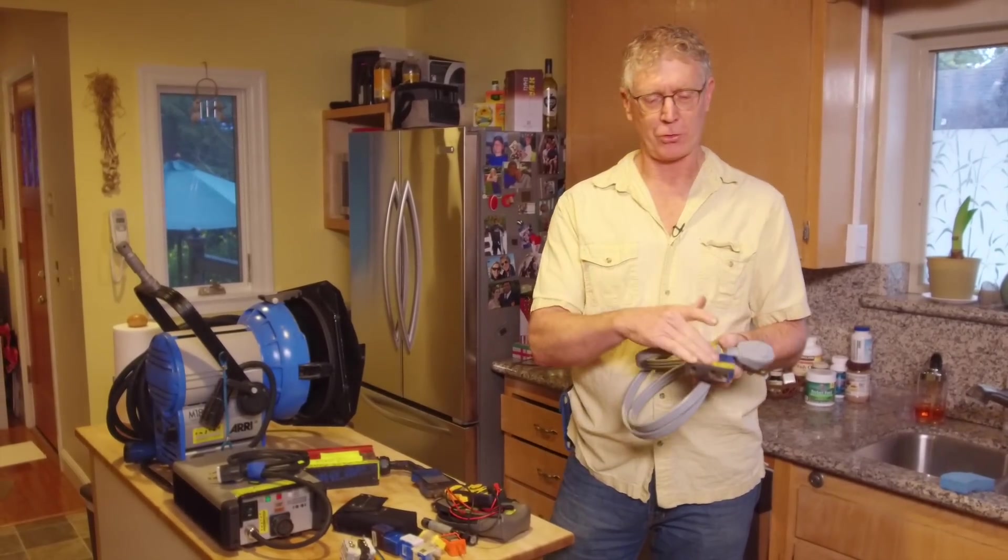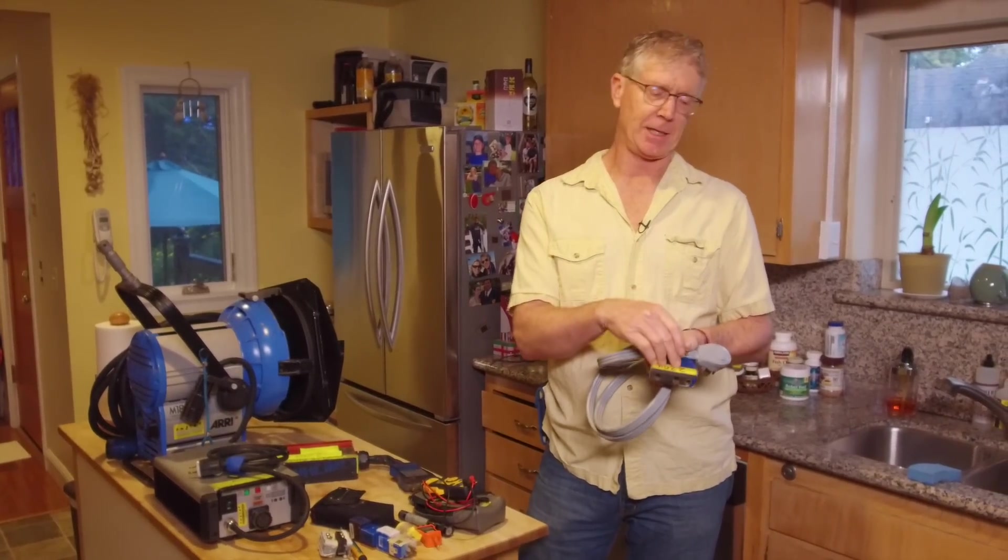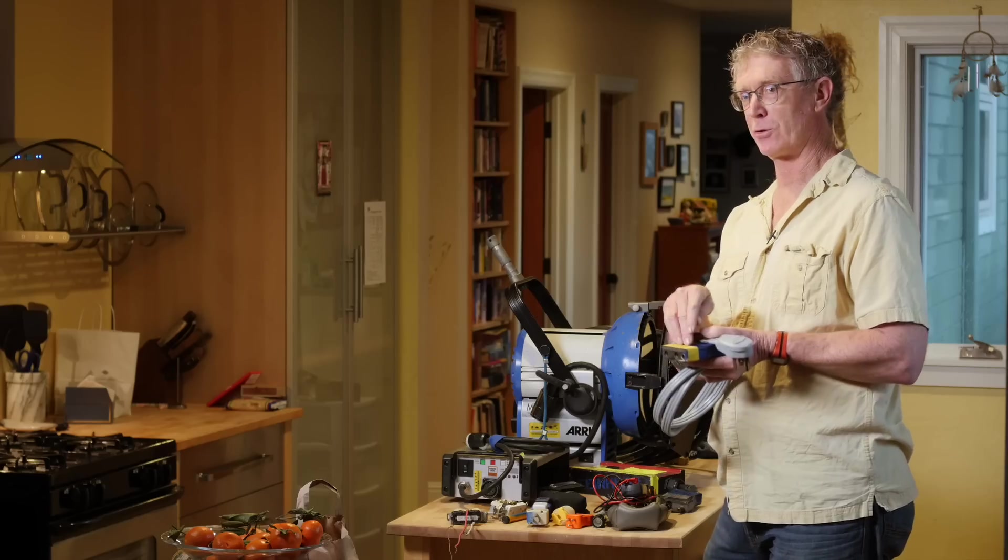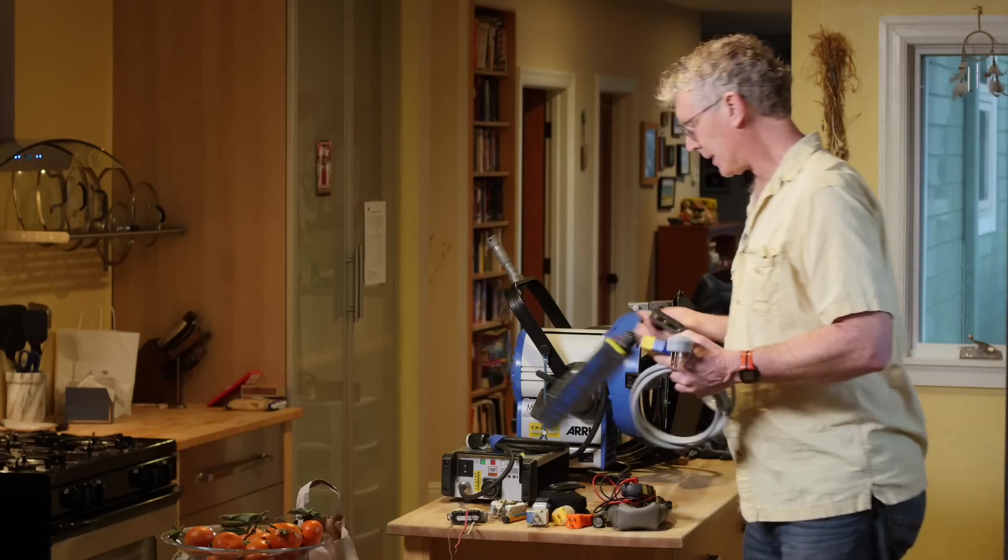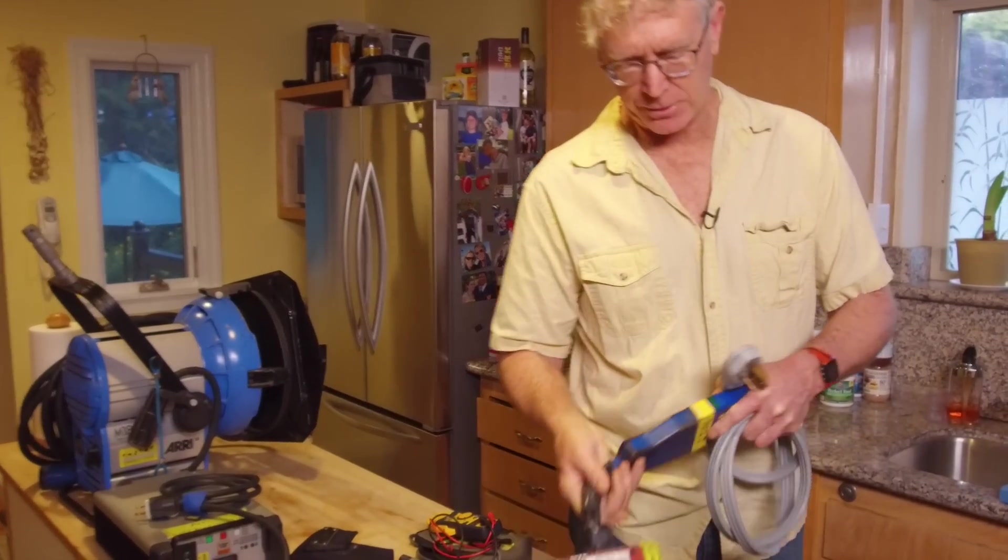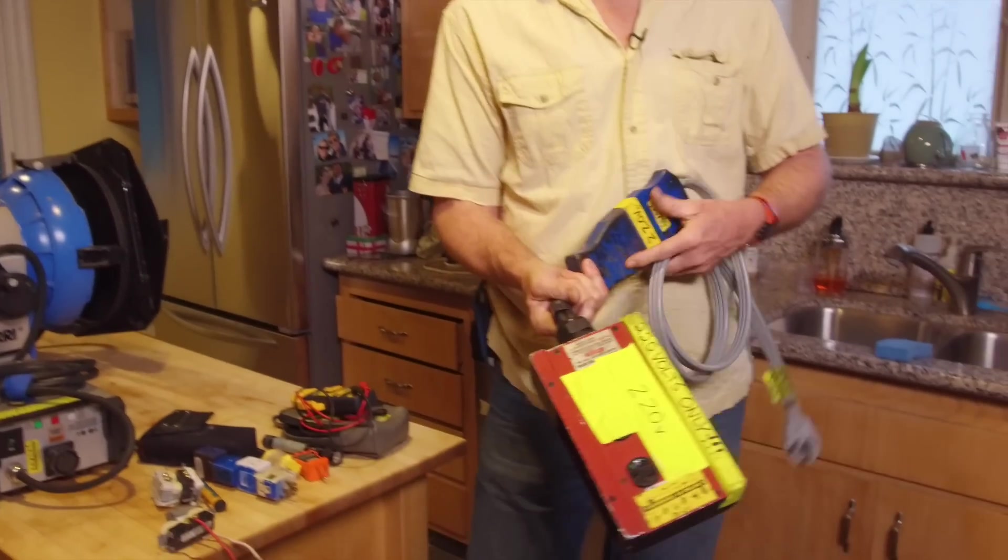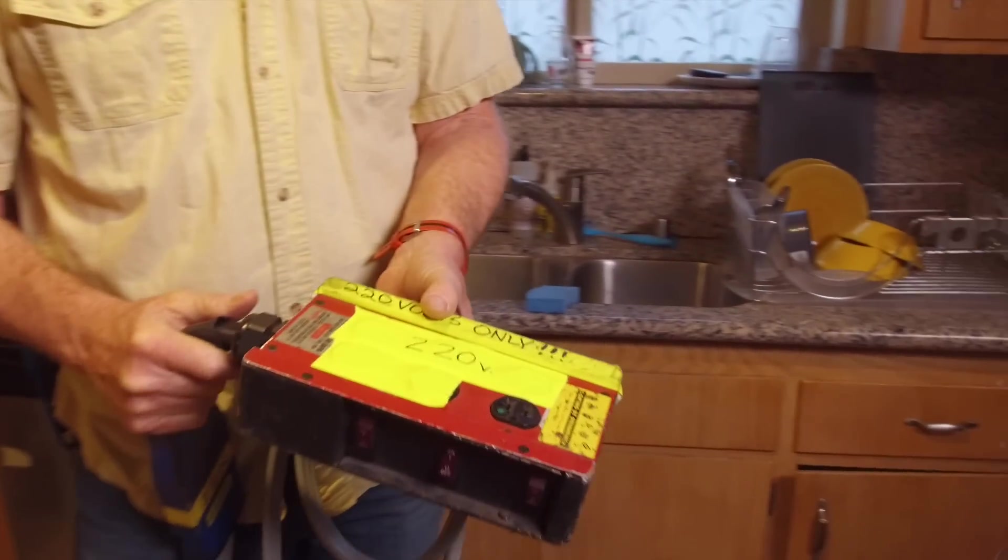There's two hots and a ground. So that means that there's 220 coming out of here. You cannot get 110 out of here because there's no neutral. So that means if I plug in an Edison distribution box like this, the only thing coming out of there is 220.